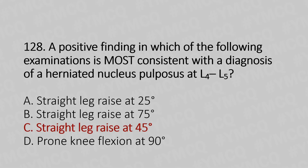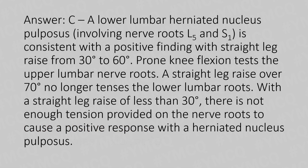And the answer is Option C: straight leg raise of 45 degrees. Explanation: A lower lumbar herniated nucleus pulposus is consistent with a positive finding with straight leg raise from 30 to 60 degrees. The prone knee flexion test is for the upper lumbar nerve roots. A straight leg raise over 90 degrees no longer tensions the lower lumbar roots. With a straight leg raise of less than 30 degrees, there is not enough tension on the nerve root to cause a positive response with a herniated nucleus pulposus.